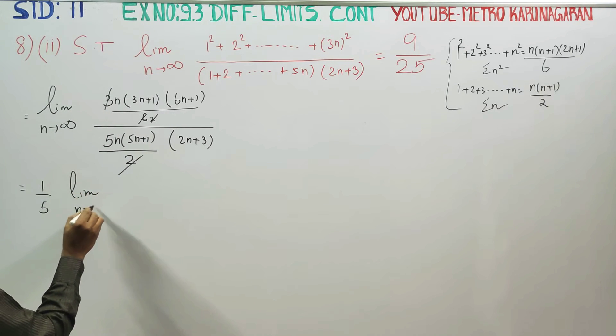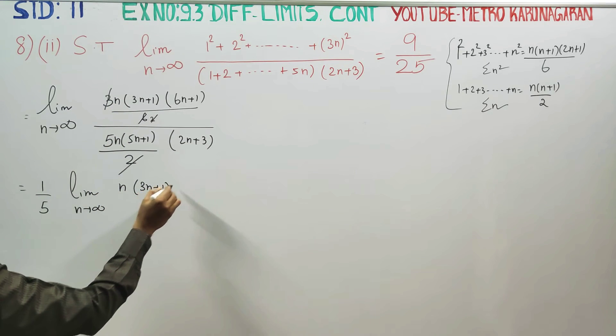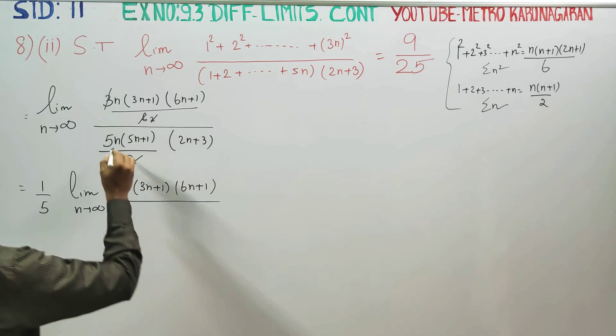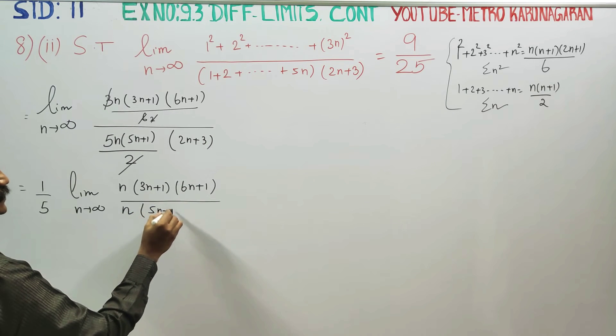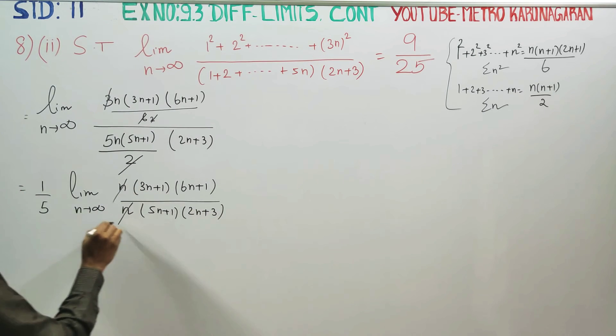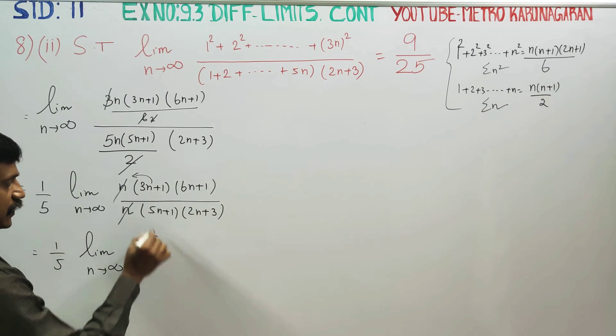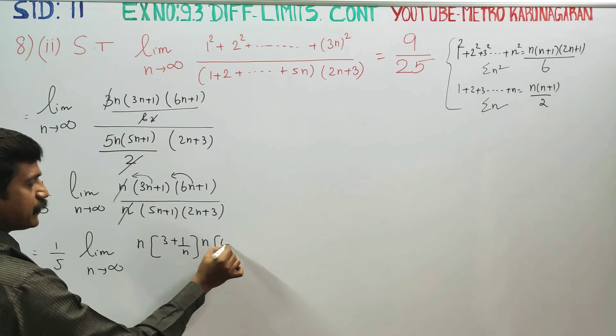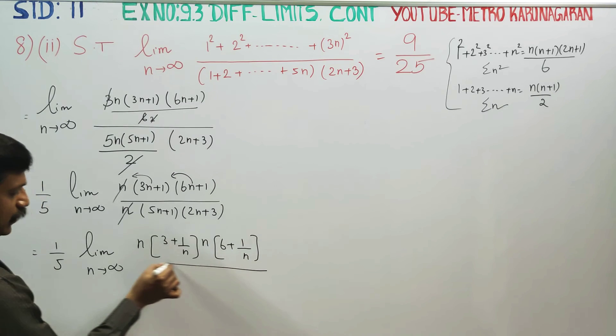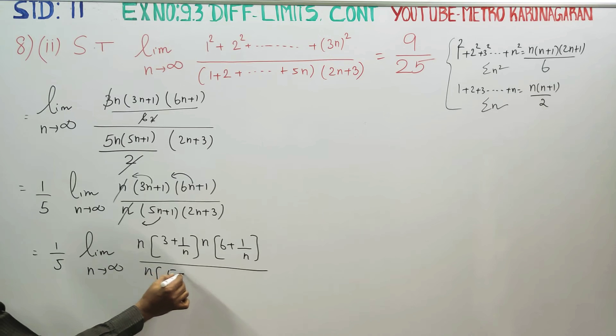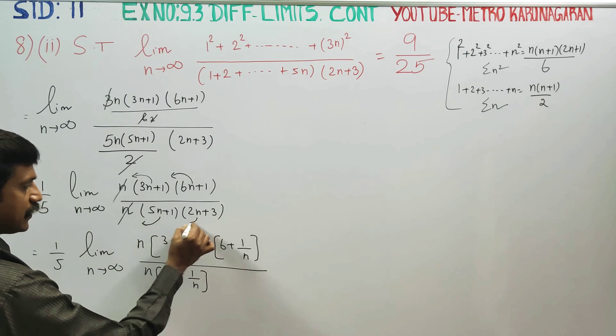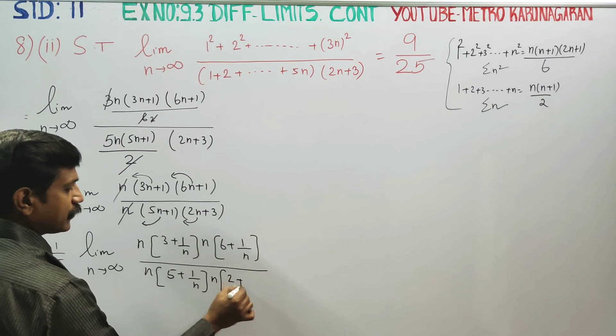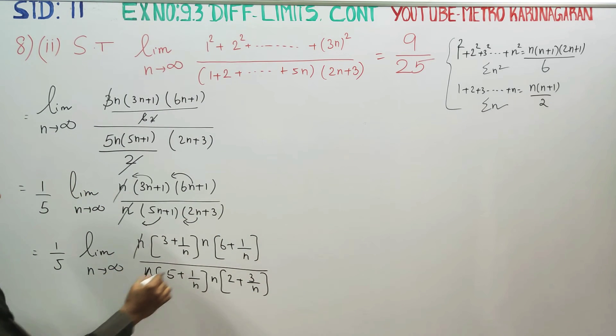Limit as n turns to infinity. The 1 by 5 times... We factor 1 by n from each term: 3n becomes 3 times (1 by n), 6n becomes 6 times (1 by n), 5n becomes 5 times (1 by n), and 2n becomes 2 times (1 by n).